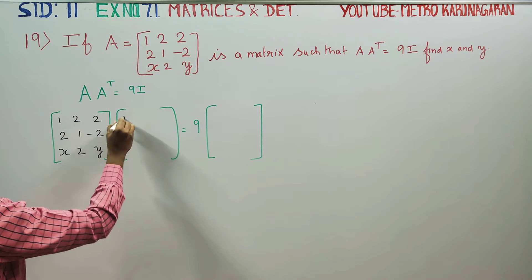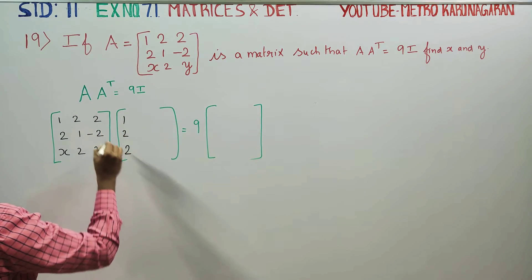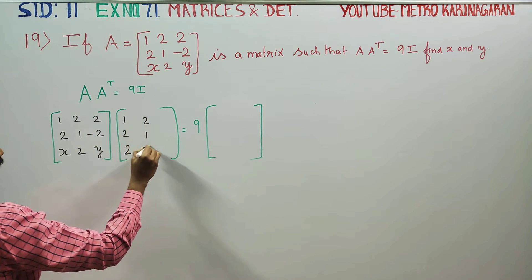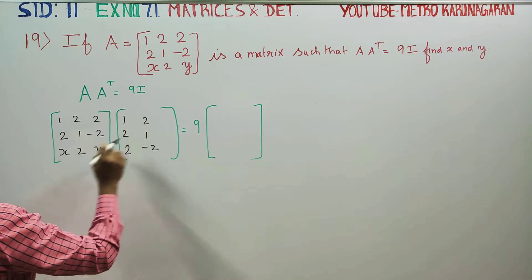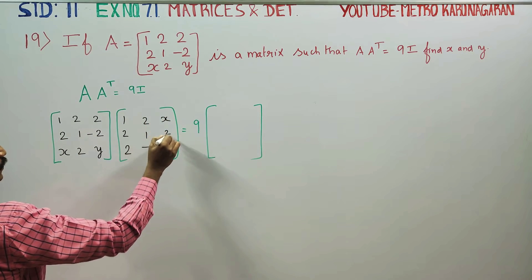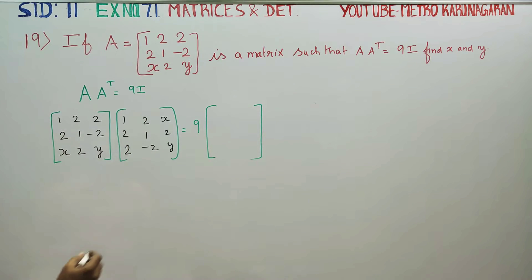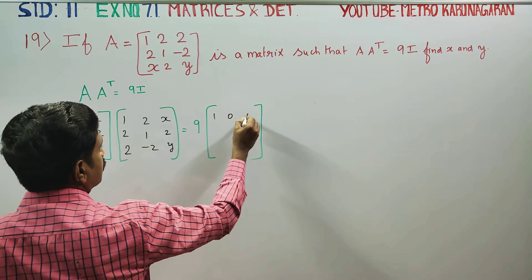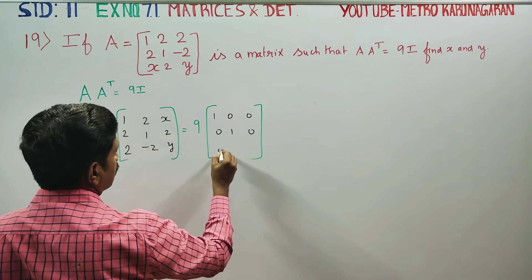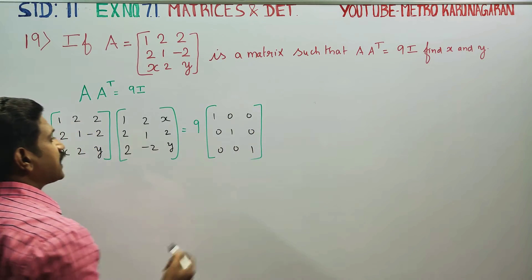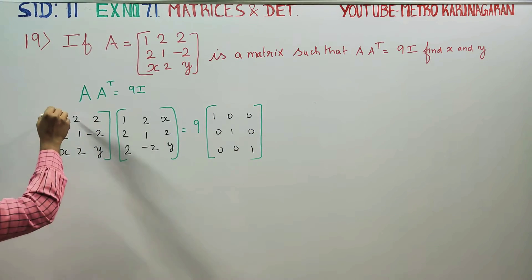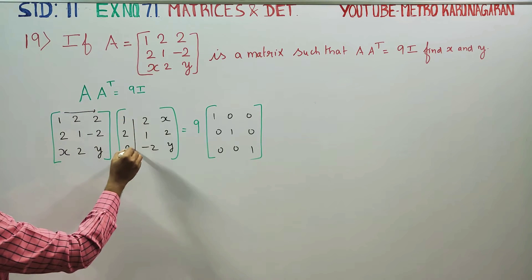A transpose is equal to [1, 2, 2; 2, 1, -2]. If you have this, x, 2, y. If you have this row, this column is equal to this. I now have this unit matrix. Therefore, it will be principal diagonal 1. We will start multiplying row into column.